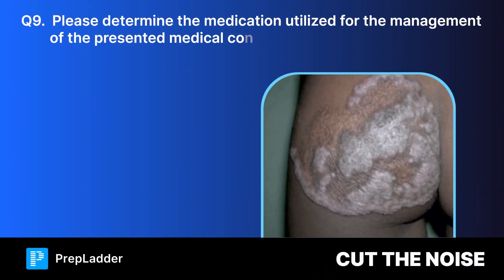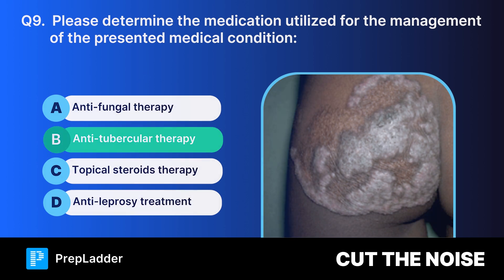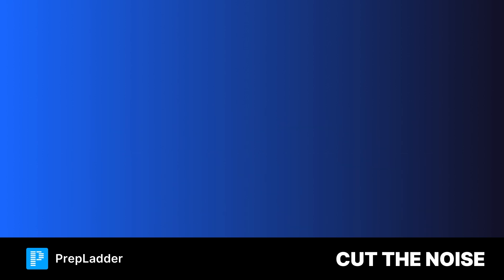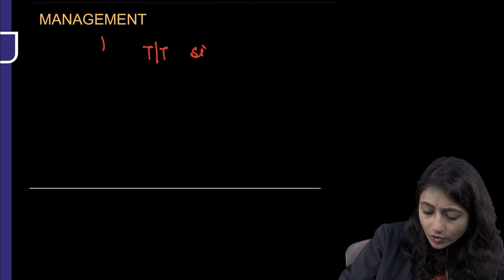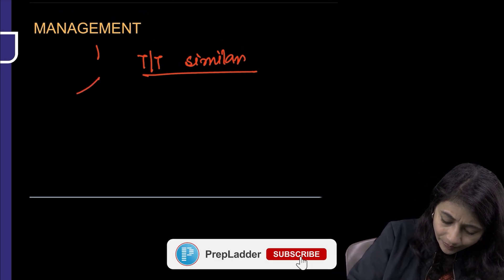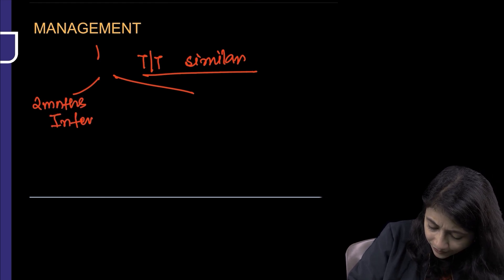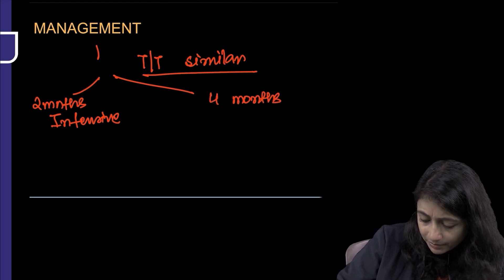Question 9: Determine the medication used for the management of the presented condition. The correct answer is anti-tubercular therapy. All forms of cutaneous TB are treated similarly: 2 months of intensive phase followed by 4 months of maintenance phase.